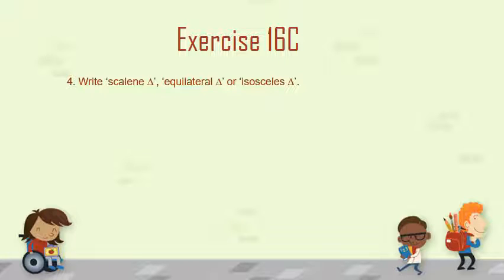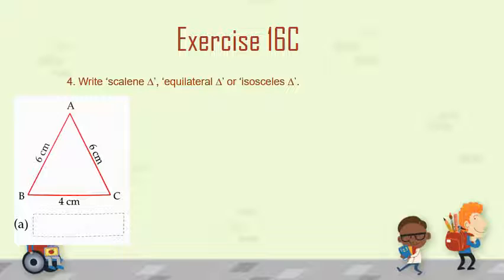Now let's move to the question. In the first figure, there is a triangle whose two sides are equal to 6 cm and one side is equal to 4 cm. So in triangle ABC, two sides are equal. What type of triangle is this? Well, it is an Isosceles Triangle — an Isosceles Triangle is a triangle whose two sides are equal.